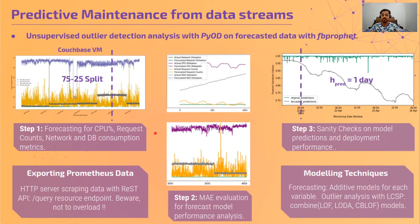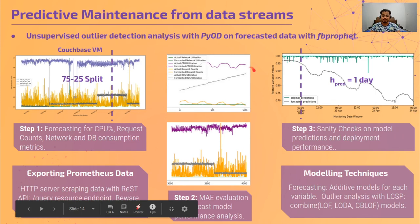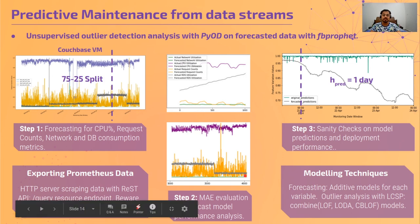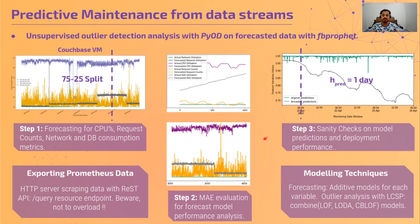We predict these variables 4.5 days into the future. Looking at the results, the purple variable is forecasted rather accurately, while another variable's seasonality is not correctly estimated by the additive models used in FB Prophet. We use mean evaluation error to analyze model performance. The second step involves predicting how far variables are from their local clustering point, indicating when a machine is not behaving in a regular fashion and action should be taken.